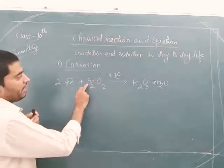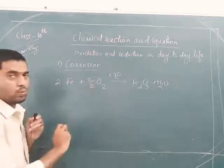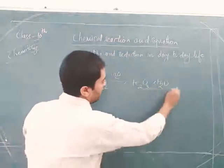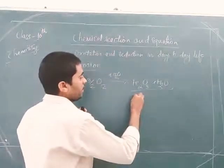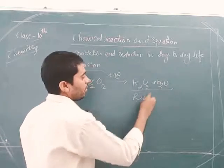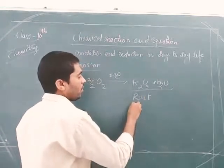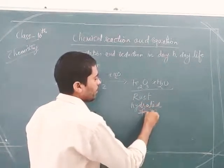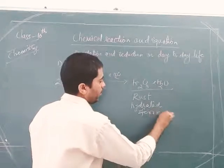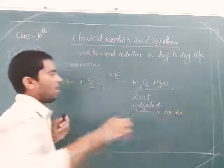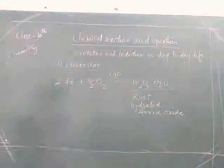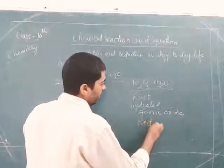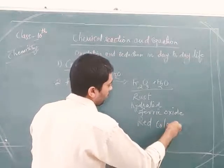We take 2 Fe and 3/2 O₂, giving rise to Fe₂O₃·xH₂O. This is nothing but rust, or hydrated ferric oxide — which is red in color.